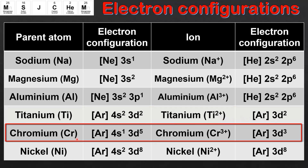Our next example is Chromium, which is an exception to the Aufbau principle. Its electron configuration is AR4s1 3d5. When chromium forms a 3+ ion it first loses the one electron in the 4s sublevel, followed by two electrons in the 3d sublevel. So the electron configuration of the Chromium 3+ ion is AR3d3.